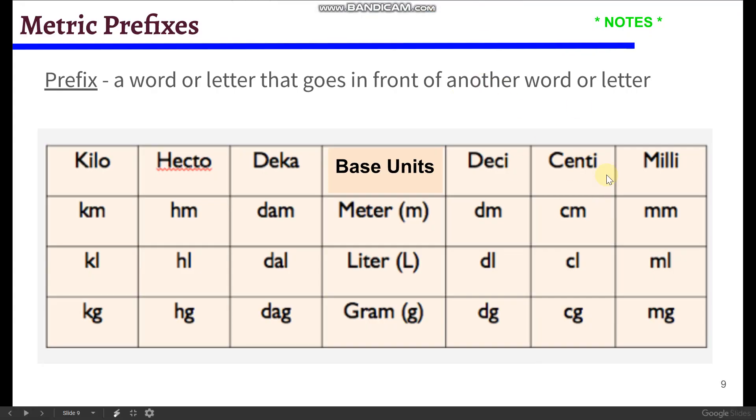Okay, and so then this page is going to be about the prefixes. So just a quick terminology: a prefix is a word or letter that goes in front of another word or letter. So we have our base units, meters, liters, and grams. And so this table just shows the example of all the different prefix that we can put on meters, liters, and grams. So you can have, for example, a kilometer, that means 1,000 meters.